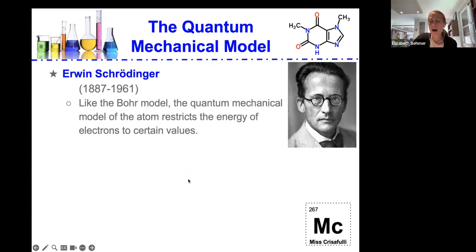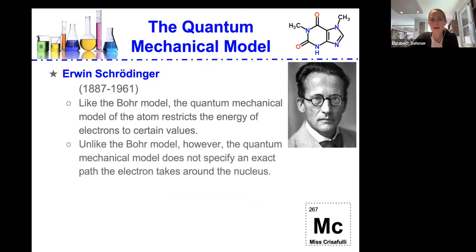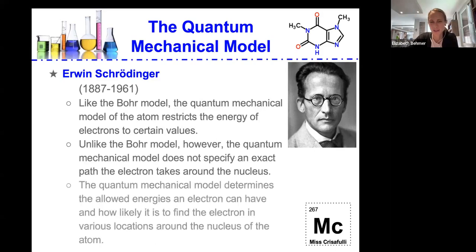So the quantum mechanical model. Like the Bohr model, the quantum mechanical model proposed by Schrödinger of the atom restricts the energy of electrons to certain values. Unlike the Bohr model, however, the quantum mechanical model does not specify an exact path the electron takes around the nucleus.